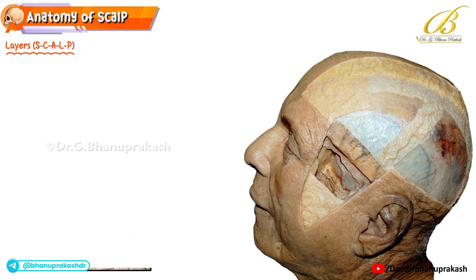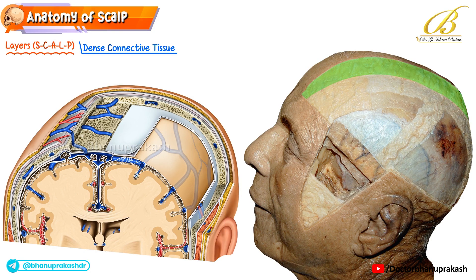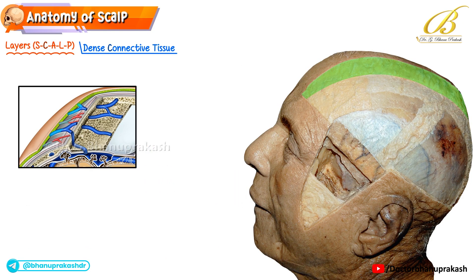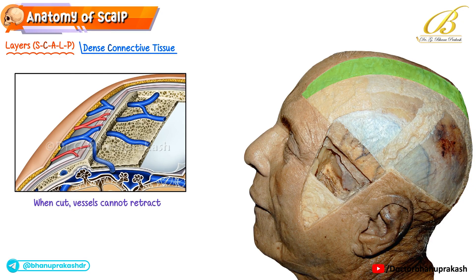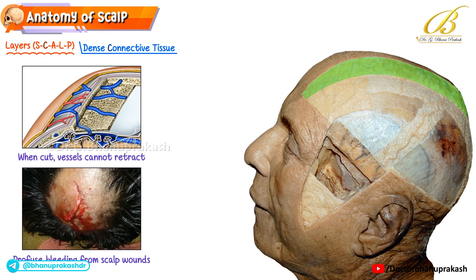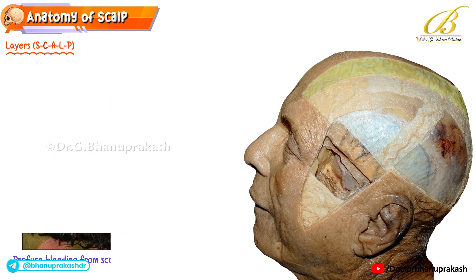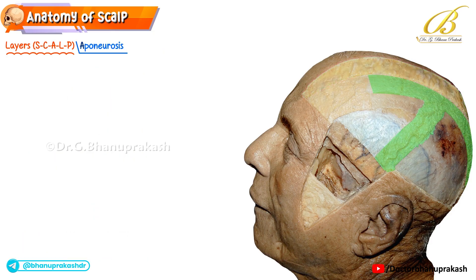Beneath the skin lies the dense connective tissue layer — a fibro-fatty, highly vascular and highly innervated layer. Its fibrous septa act like tiny splints that hold blood vessels open, so when the scalp is cut these vessels cannot retract, leading to profuse, persistent bleeding. This is a very important clinical point.